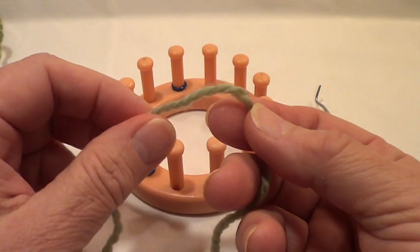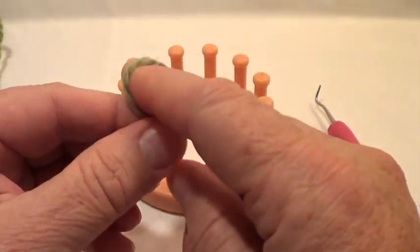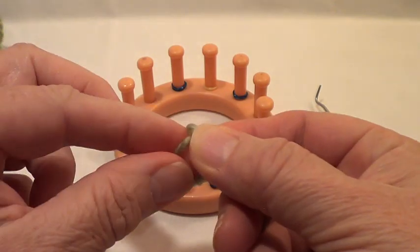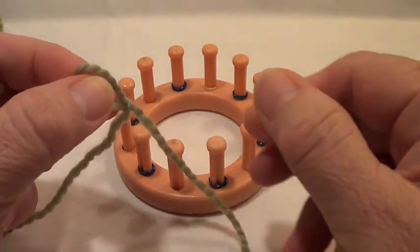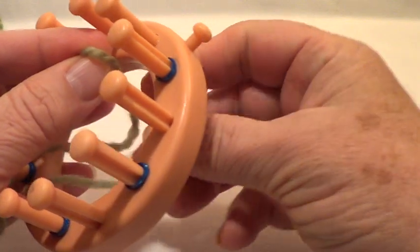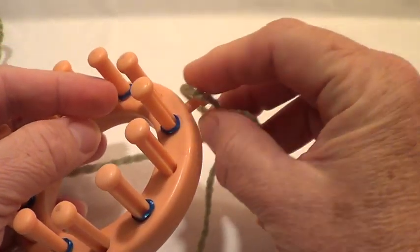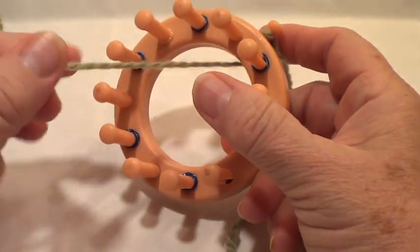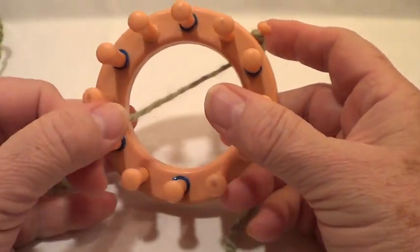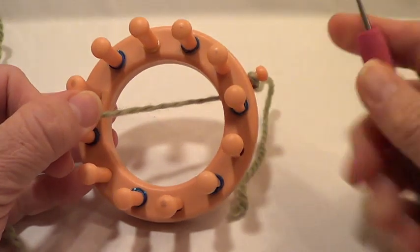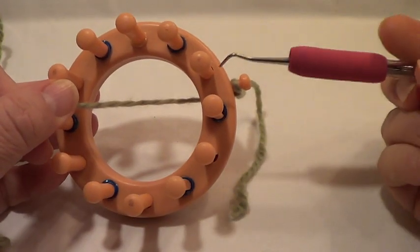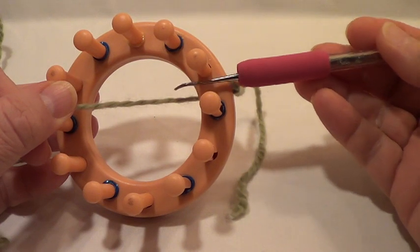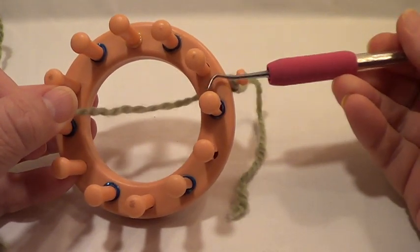Start off, we'll make a slip knot by twisting this and bringing it over the long strand and pulling it through. Place the slip knot on the anchor peg and tighten it up.